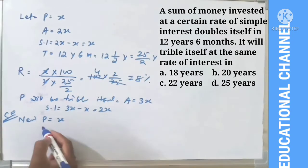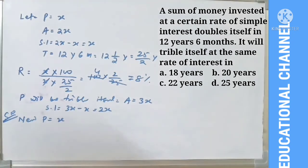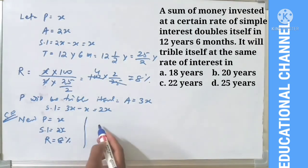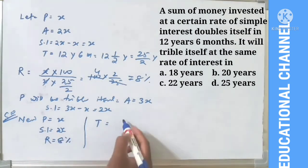With principal P = x, simple interest SI = 2x, and rate R = 8%, we find time T = (SI × 100)/(P × R) = (2x × 100)/(x × 8).